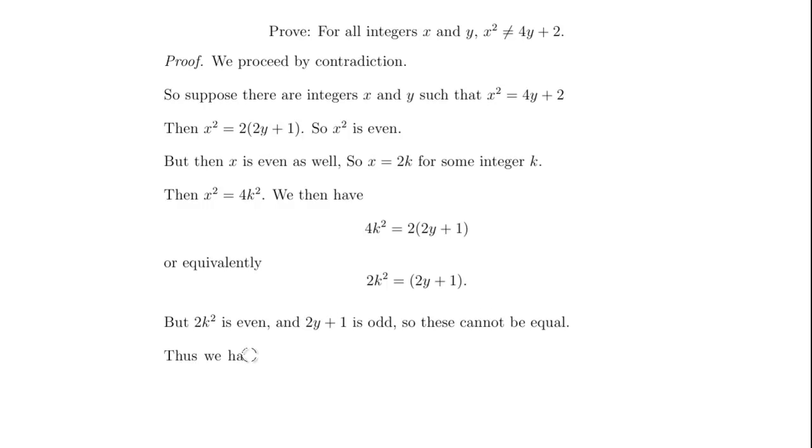That can't be. Thus we have a contradiction. So there must not be any integers x and y such that x squared is equal to 4y plus 2. And that's the end of our proof.